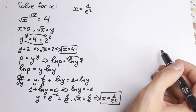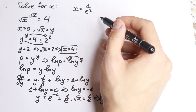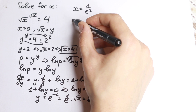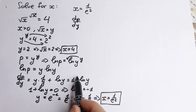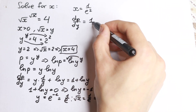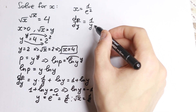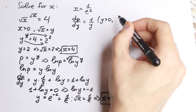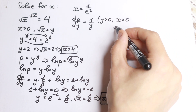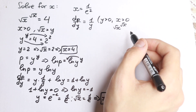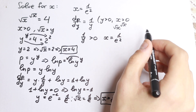Let's find the second derivative. The derivative of 1 plus ln(y) is 1 over y. Since y is always positive (because x is greater than zero and we have the square root of x to the power square root of x, which is all positive), we have 1 over y greater than zero at x equals 1 over e squared. So this is a point of minimum.